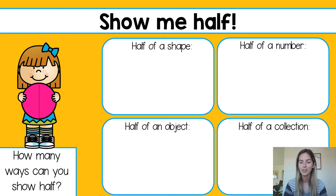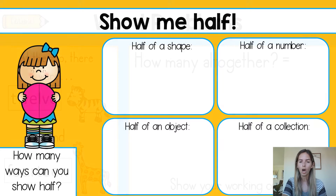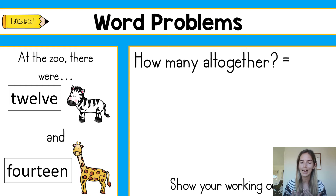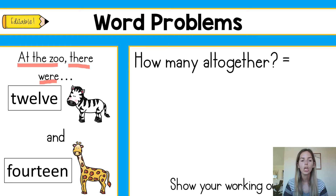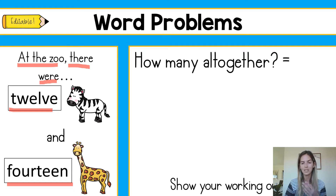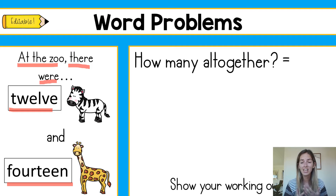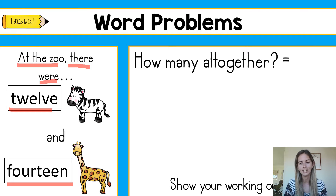You will need to pause the video and complete this activity. The next thing — our last warm-up activity — is a word problem. Today's word problem is: at the zoo there were 12 zebras and 14 giraffes. How many altogether? You will need to show your working out. You might like to draw a picture — you don't need to draw actual zebras and giraffes, you might like to use another object. Pause the video, solve this problem and then come back and we'll do it together.